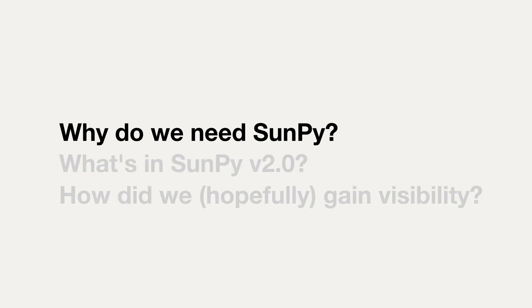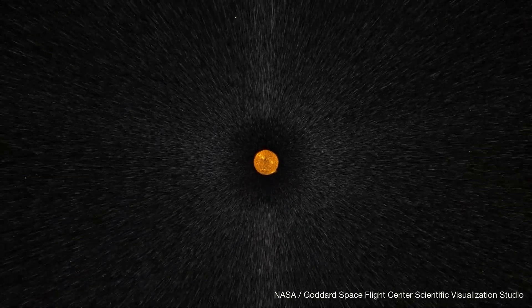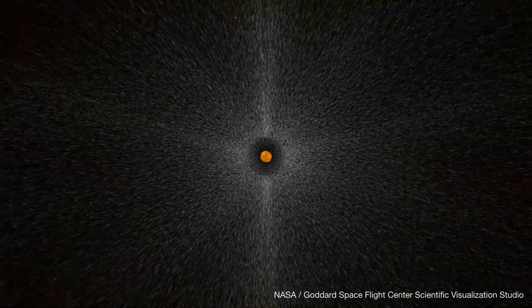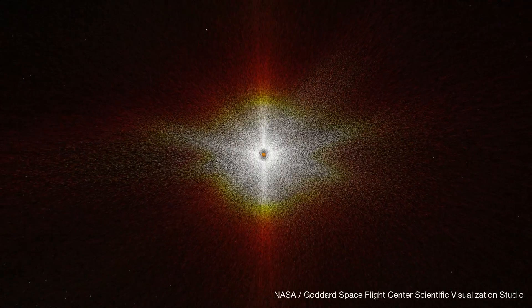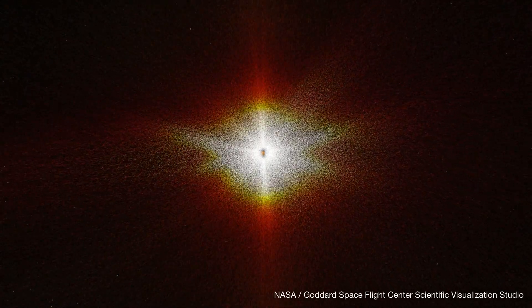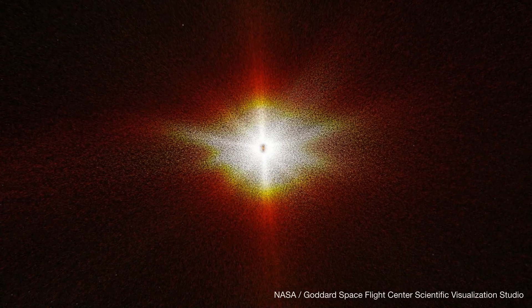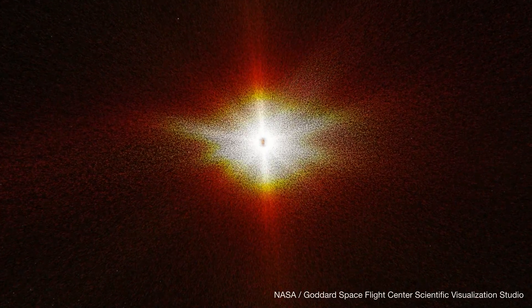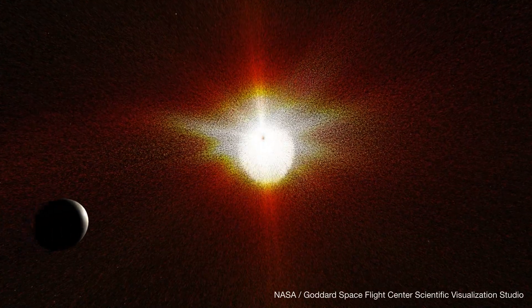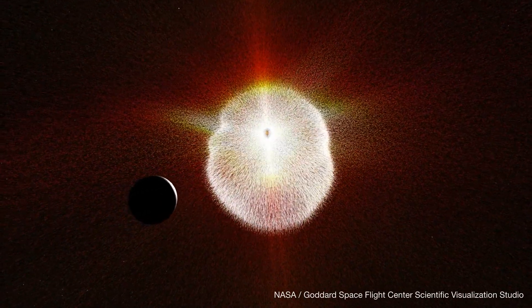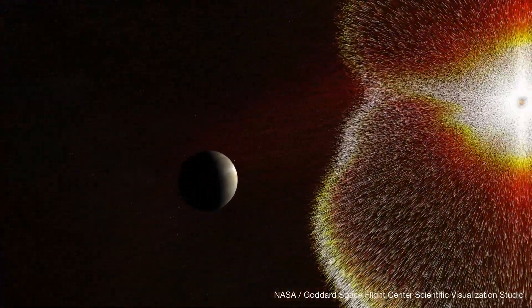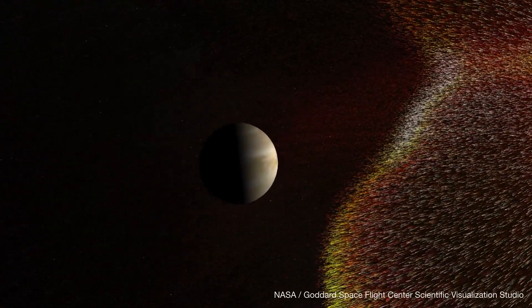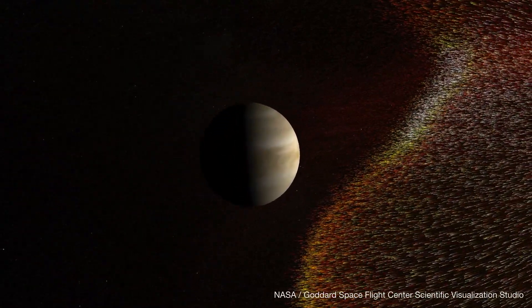So first, why do we need SunPy? What is solar physics all about? The Sun is an active star. It constantly spews particles into space at speeds of about 500 kilometers per second, which we call the solar wind. The solar wind interacts with all of the planets, interacts with the Earth's atmosphere to produce the aurora, and it carves out a magnetic bubble that the solar system lives in, called the heliosphere. So studying the Sun helps us understand all these different interconnected behaviors throughout the solar system.